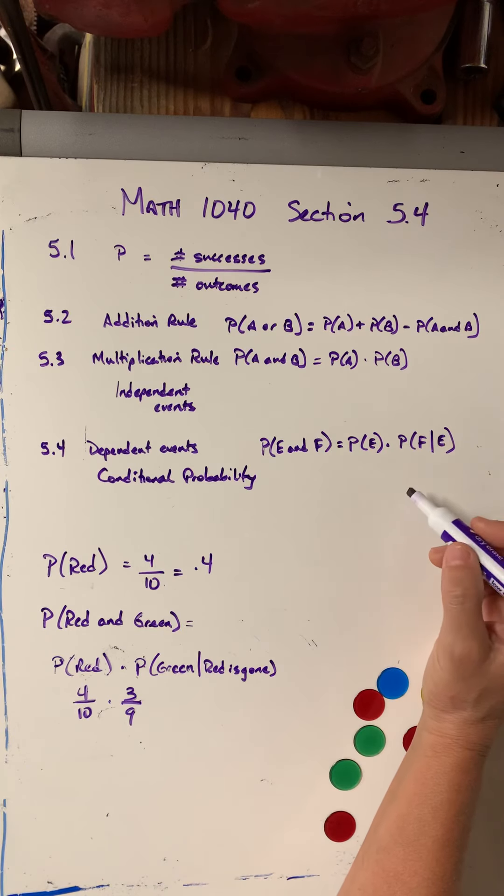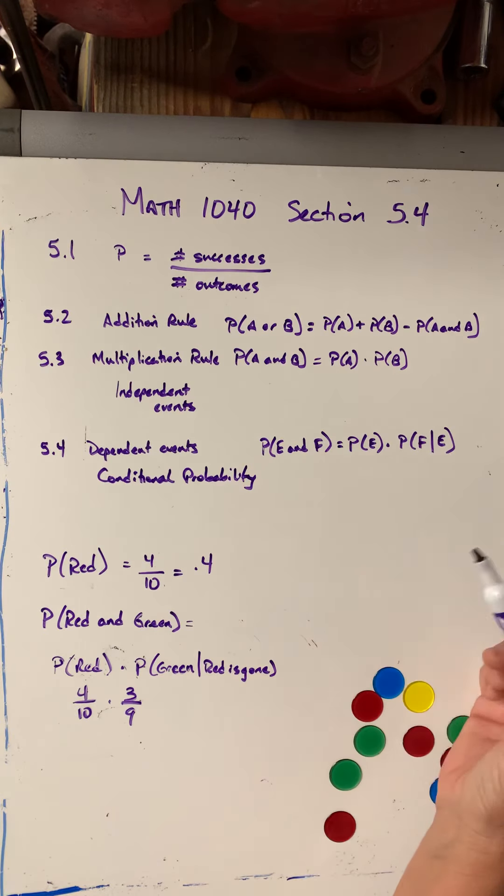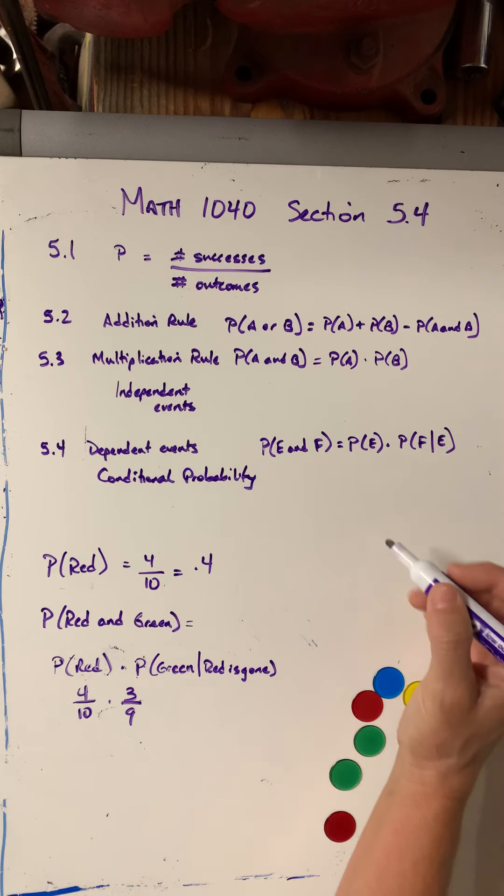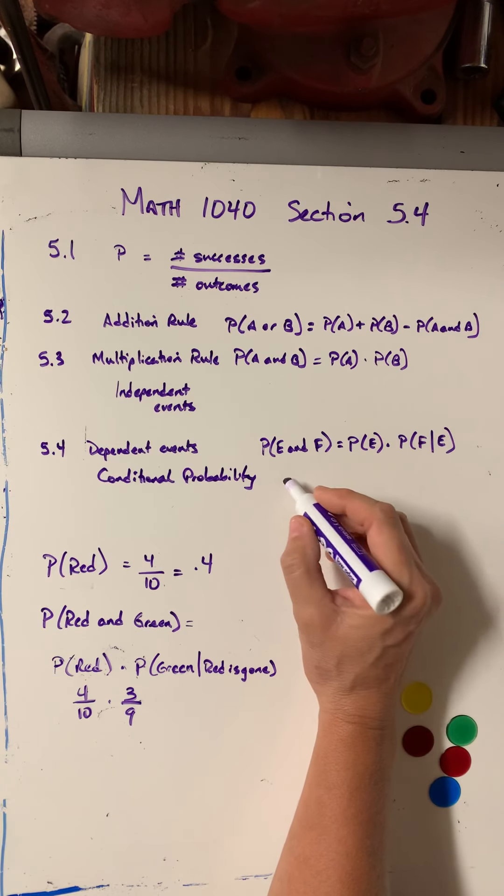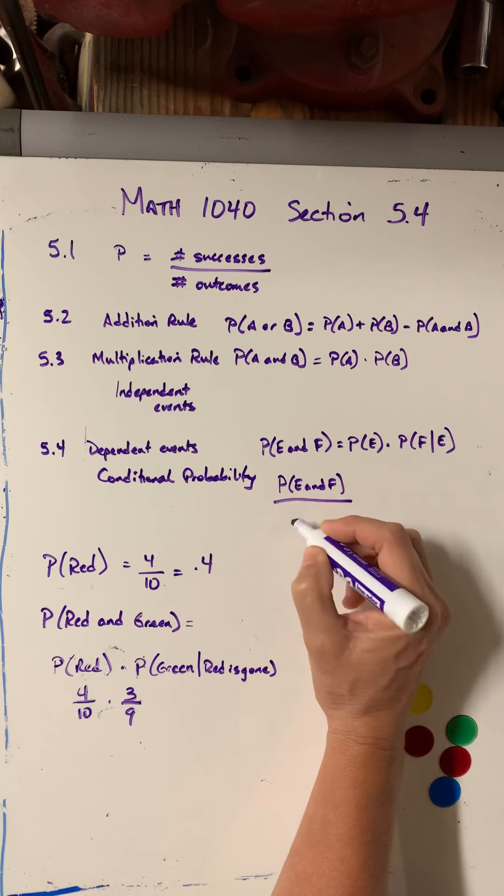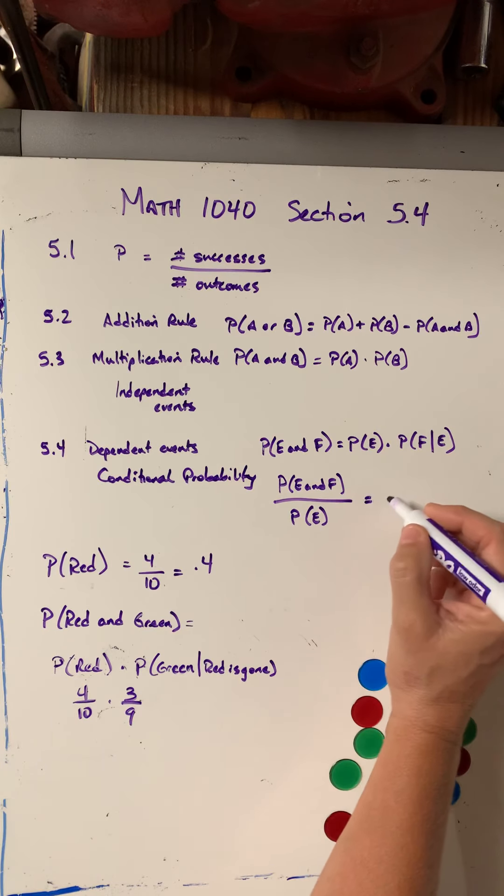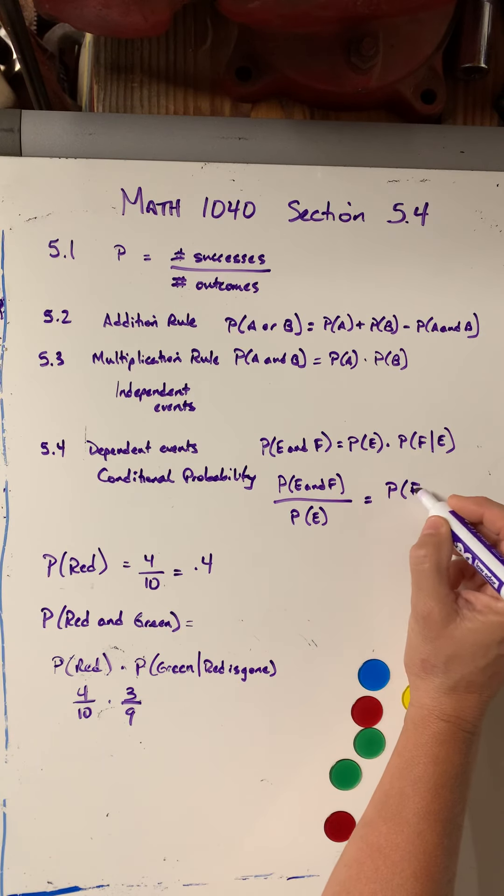And in the book, what they do is they take this formula and they solve it for this conditional piece. So to get this part alone, I would just divide both sides by the probability of E. So they end up with this formula, probability E and F divided by probability of just E, so I divided that, equals the conditional probability.